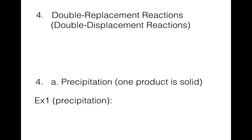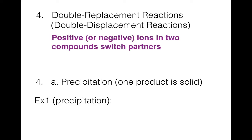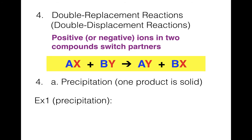Number 4: double replacement reactions, also called double displacement. The analogy is a double date — two couples go out, and then switch partners. Two compounds switch partners, and everyone still has a date at the end. You must always make sure every compound has a cation and an anion. There are two types: precipitation and neutralization.